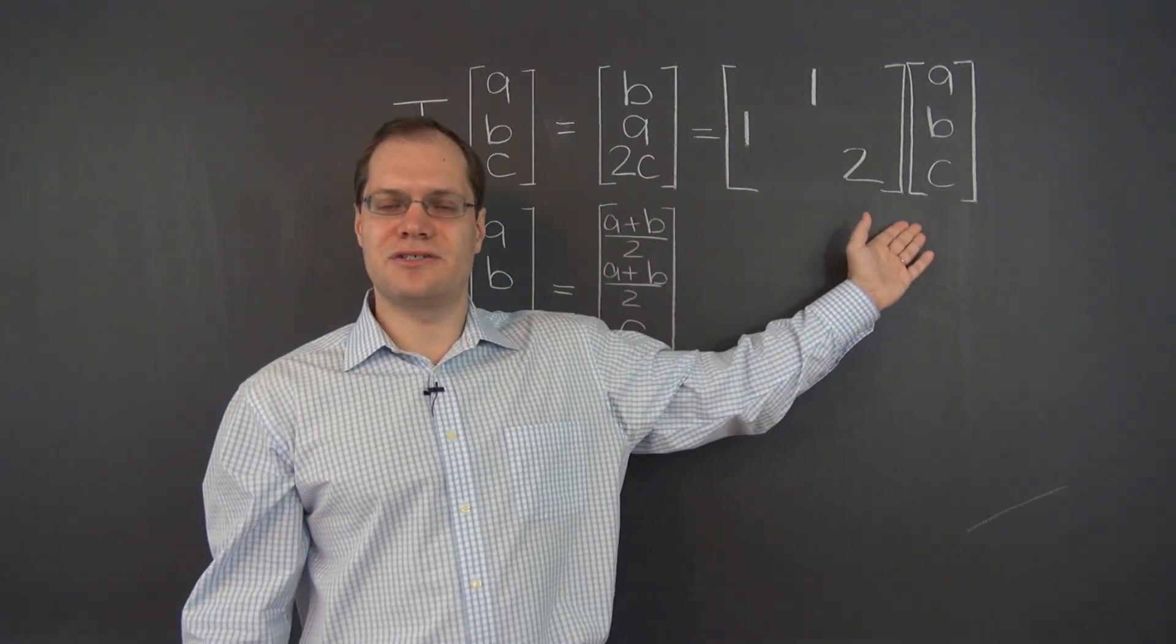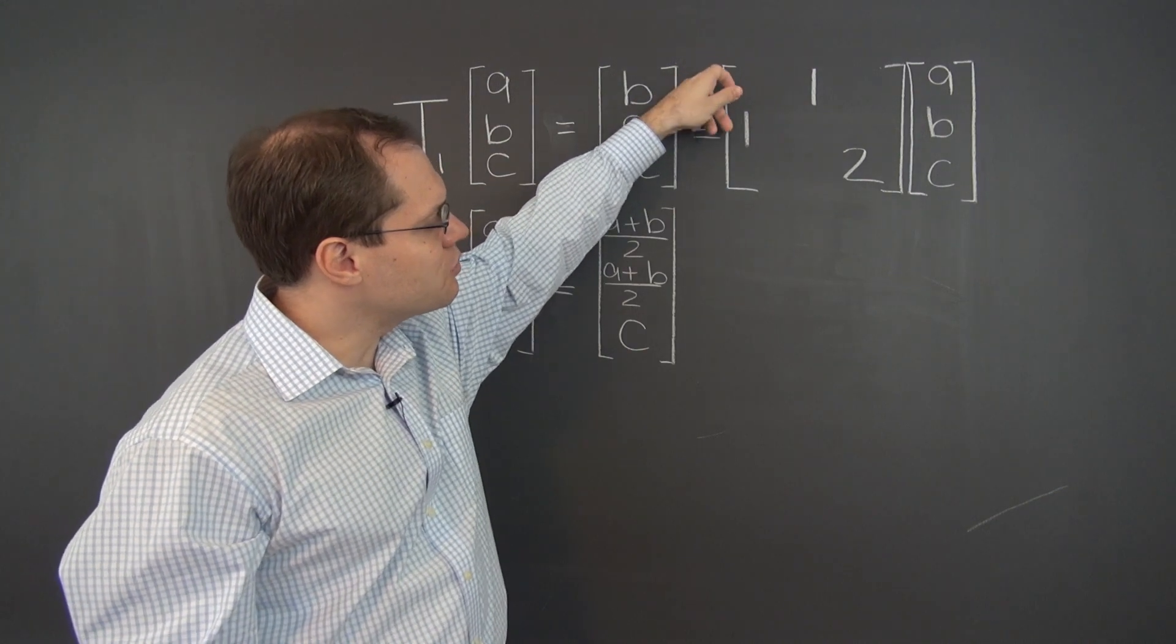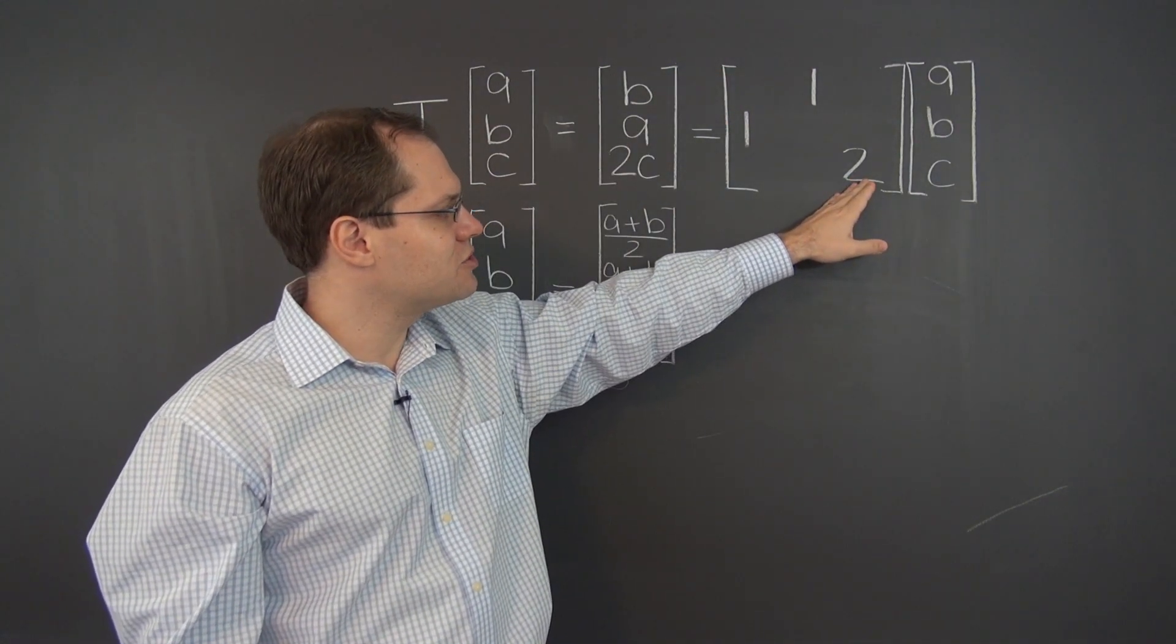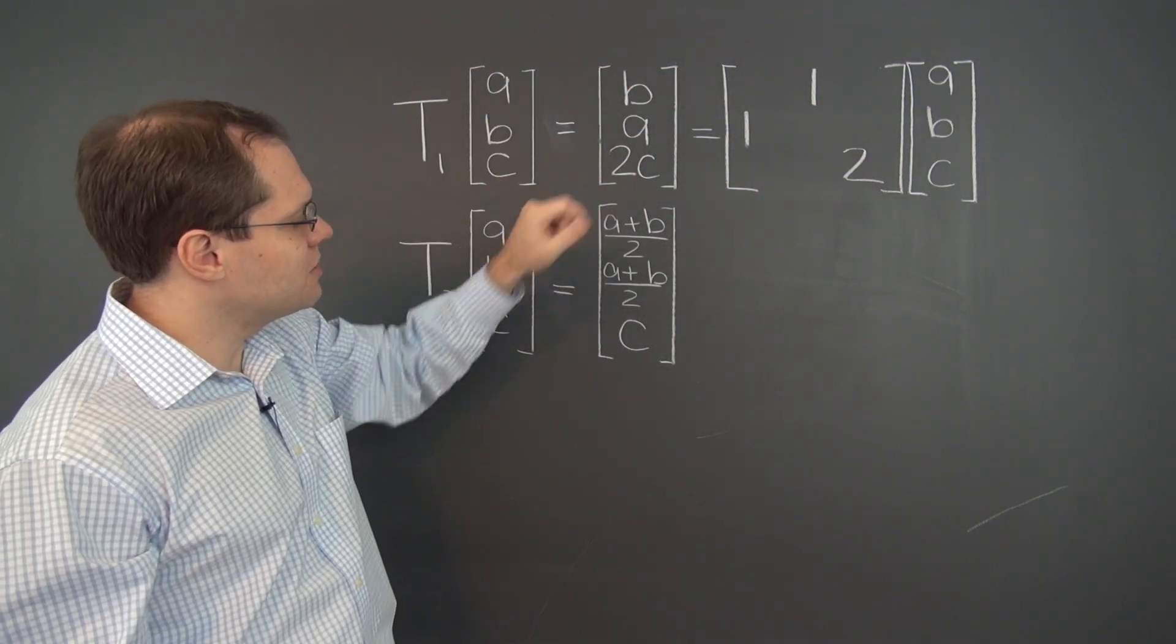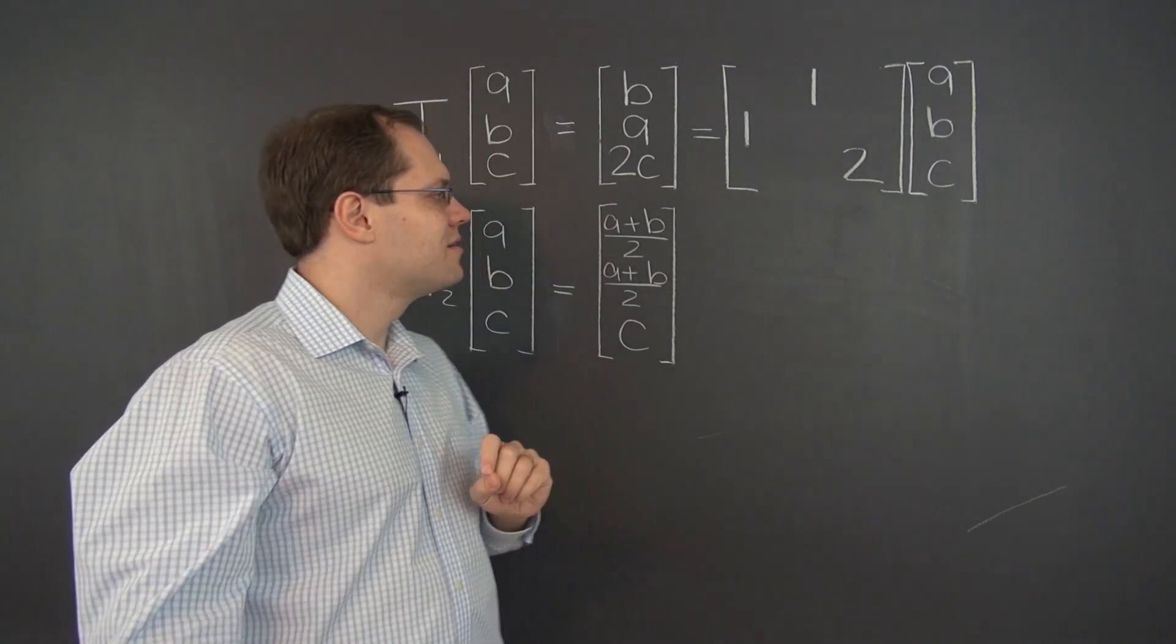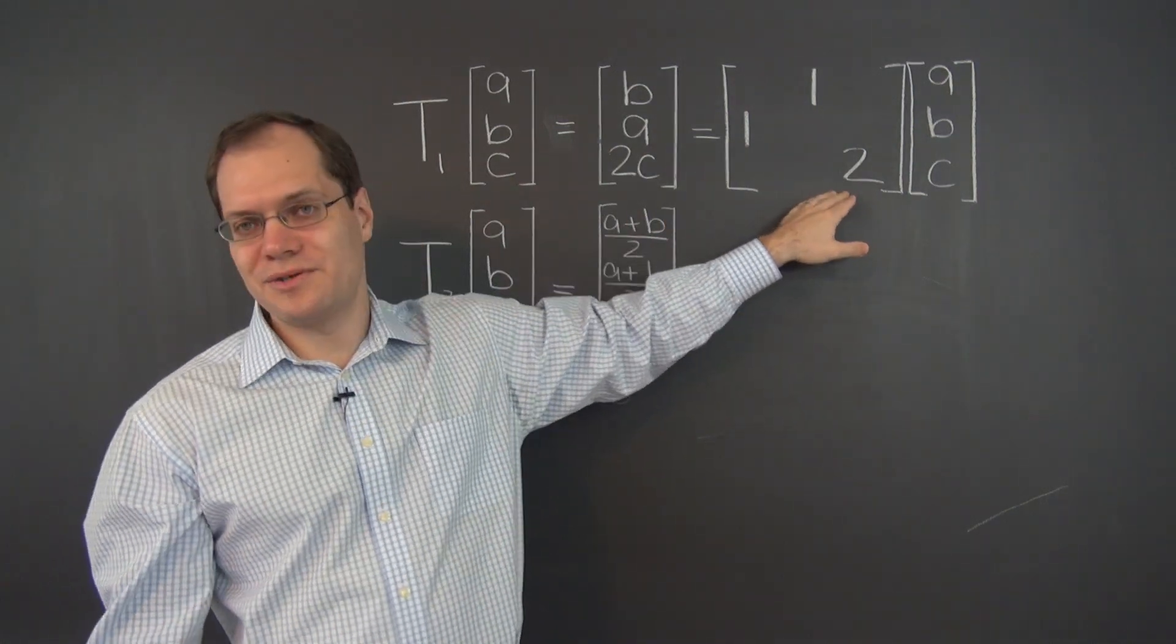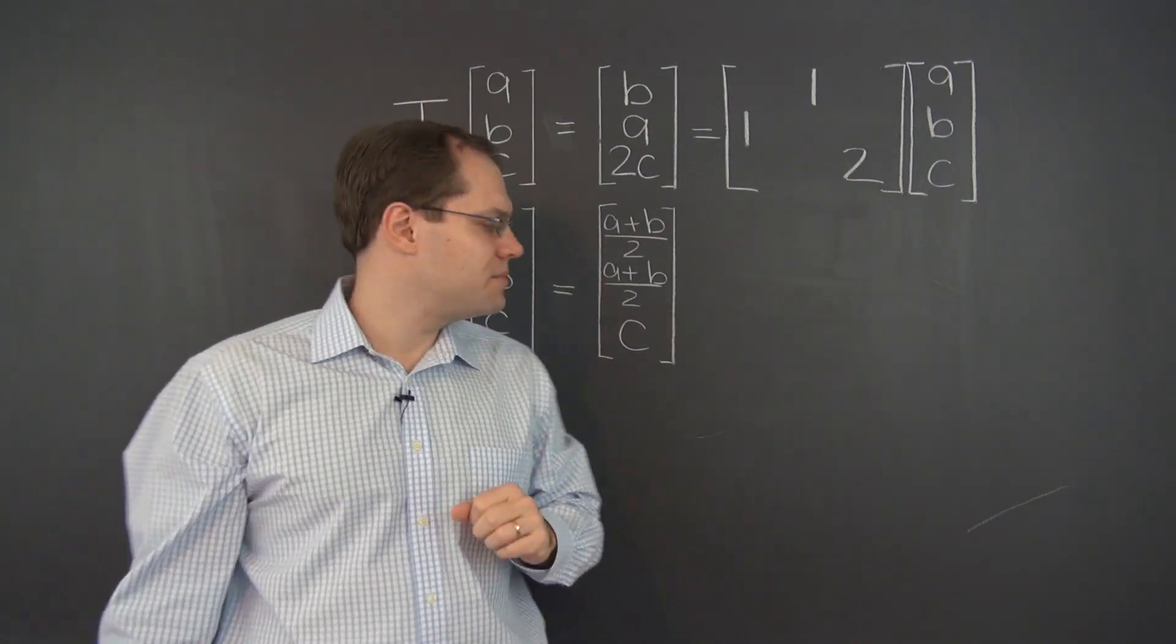So because this elementary matrix is coming from the left, what is its interpretation? Well, it will switch the first two rows and multiply the last row by 2. And that's indeed what we're seeing here. It'll switch the first two rows and multiply the last row by 2. So this one is, in fact, represented by a matrix. And it actually happens to be an elementary matrix.